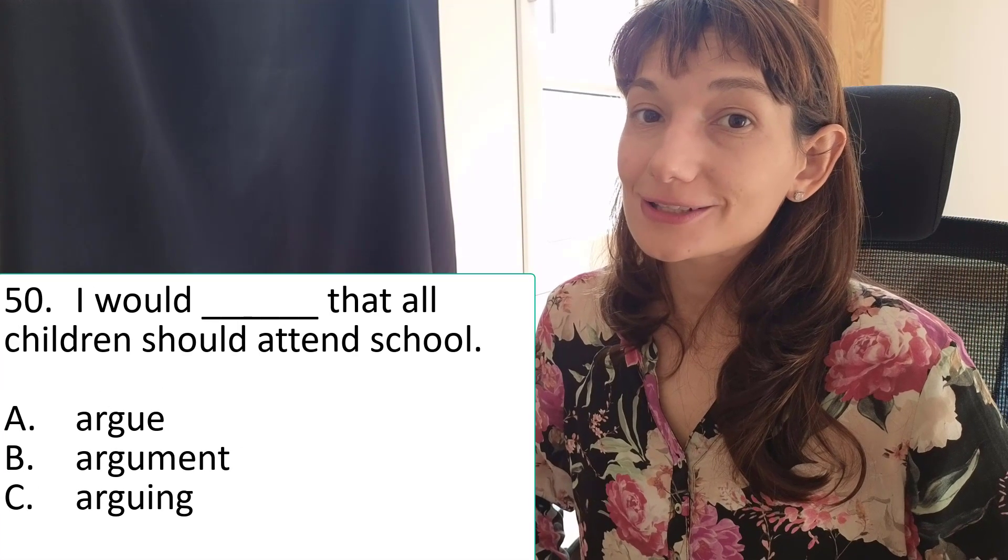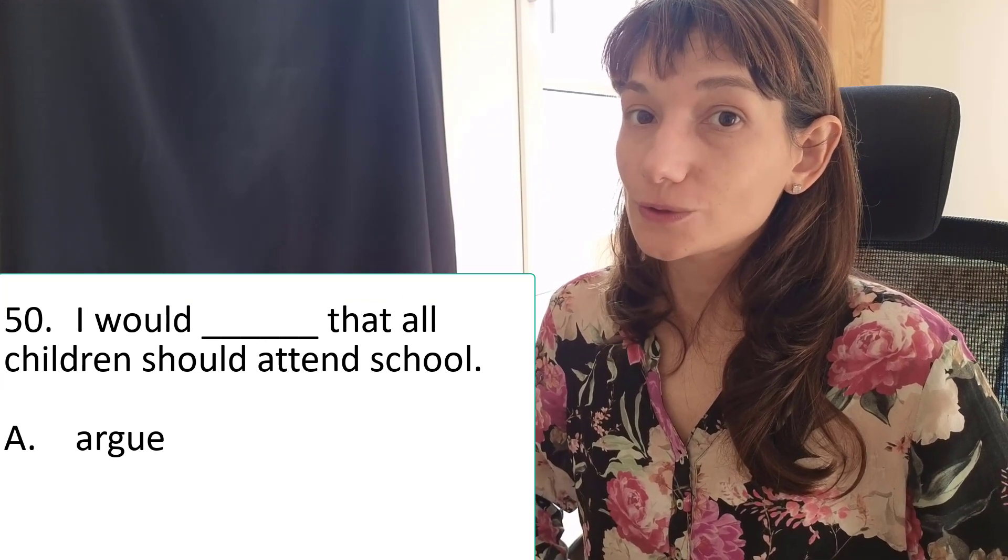And the correct answer is, I would argue that all children should attend school. This is the end of this self-assessment test. If you want to hear an explanation of each grammar aspect tested in this test, please go to the extended version of this self-assessment test called Grammar Review and linked in the description box below. I would love to hear from you and I would love to know what aspects of grammar you find the most challenging. And I will do my best to make a separate video explaining this particular aspect, tailored for IELTS, of course. So, if you have time, leave it in the comment section below and I will be sure to review it. Until next time, bye-bye.